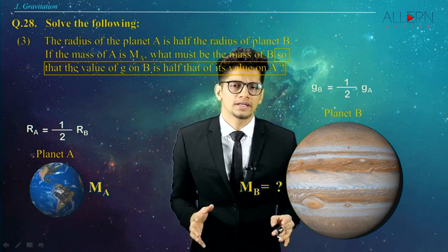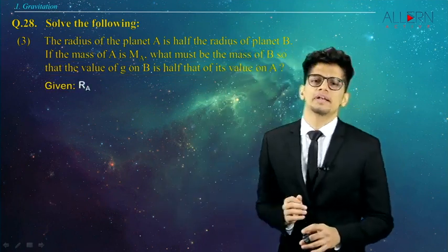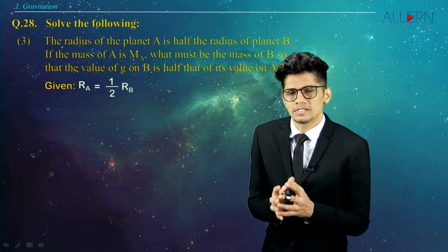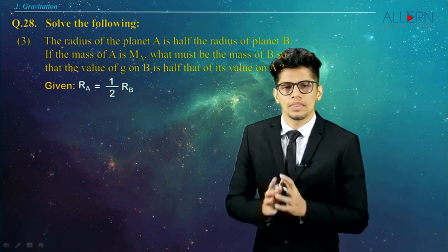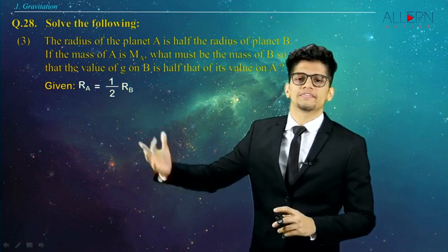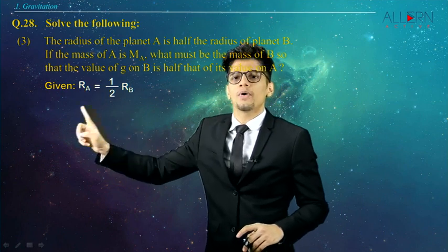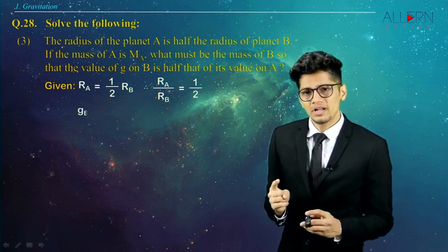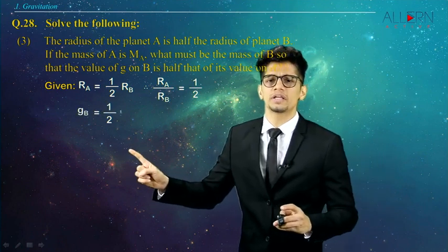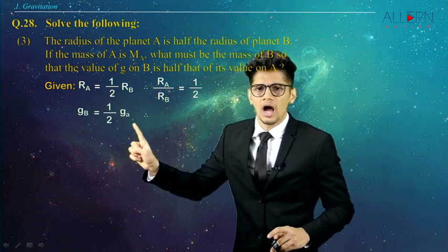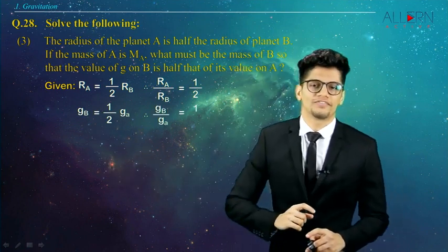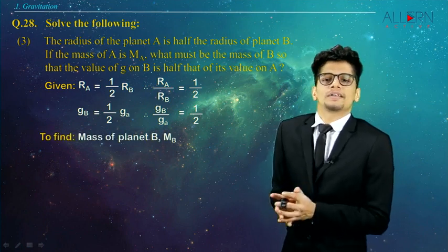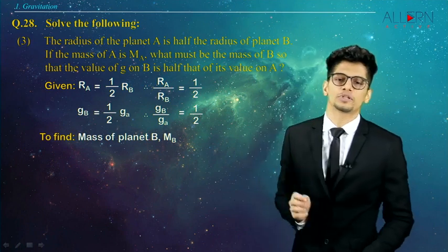Writing all this as given data: R_A is equal to half of R_B. Shifting R_B to the left-hand side, we get R_A upon R_B is equal to half. Similarly, G_B is equal to half of G_A, which means G_B upon G_A is equal to half. We need to find the value of mass of planet B, that is M_B.